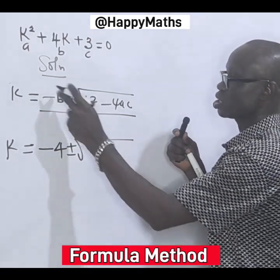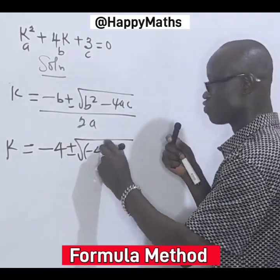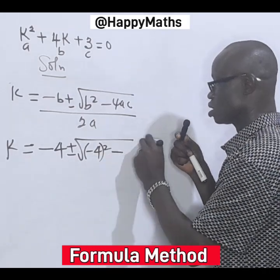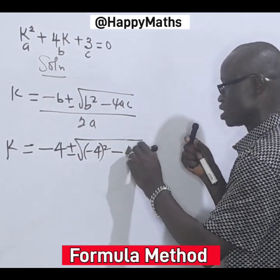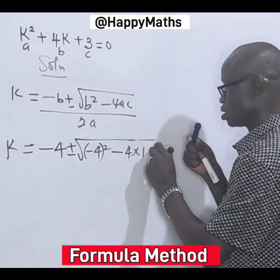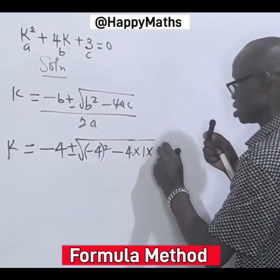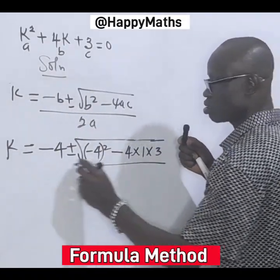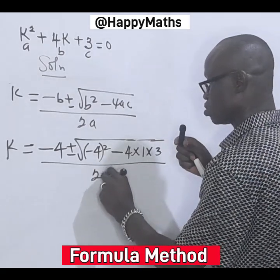Then b again is 4, so bracket 4 squared. Then 4 times a is 1, times c is 3, over 2 times a again is 1.